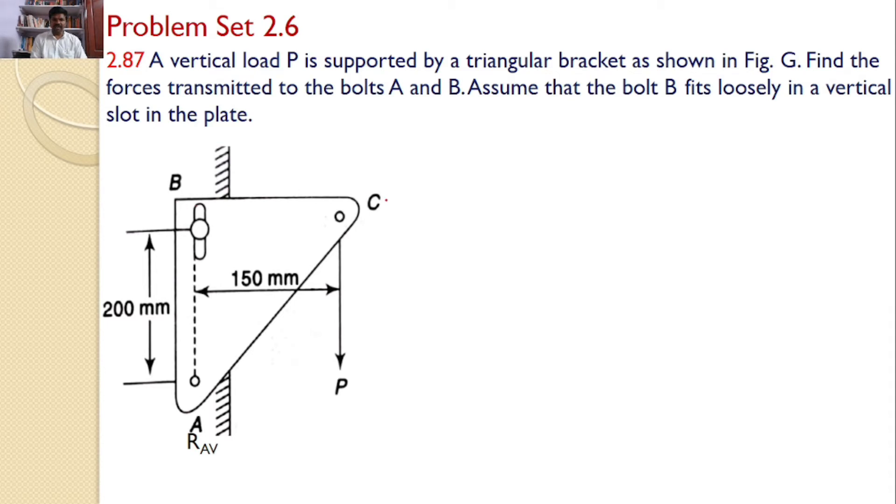Clearly we can see there is a triangular bracket fixed to the walls by means of bolts A and B. A is completely fixed, but B is fixed in such a way that it is loosely fitted in a vertical wall so that there is a provision of vertical movement, but it cannot move in a horizontal direction.